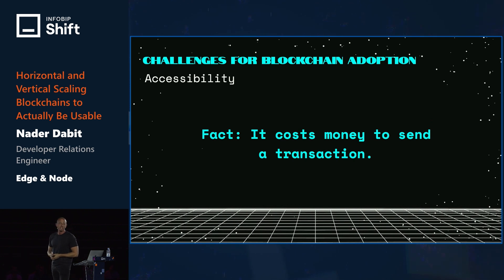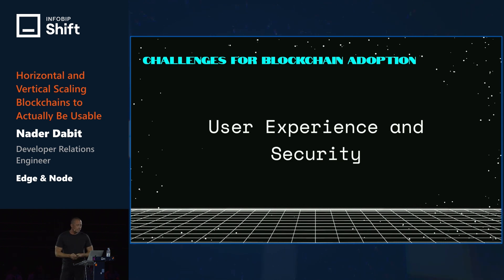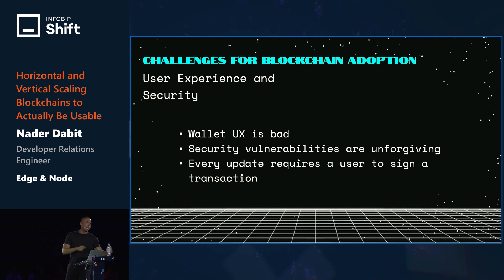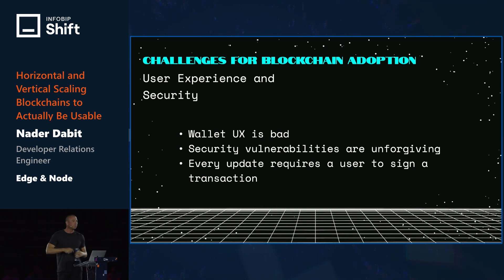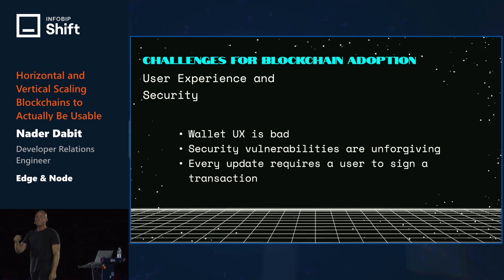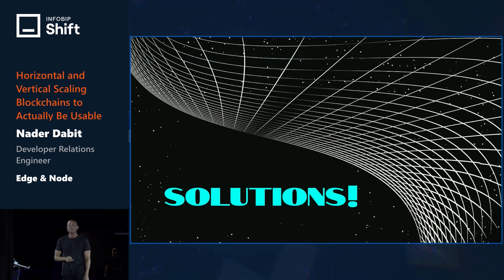I'm going to talk about how we might solve some of these challenges and how some people are already approaching them. User experience and security is a whole domain in itself — they go hand in hand, having a lot to do with wallets and identity. Wallet UX is bad. Security vulnerabilities are unforgivable: if you click the wrong button, all your money could be drained and there's nothing anyone can do. And imagine having to sign a transaction every time you like a tweet — that's a bad UX and that's the current state of most blockchain applications.